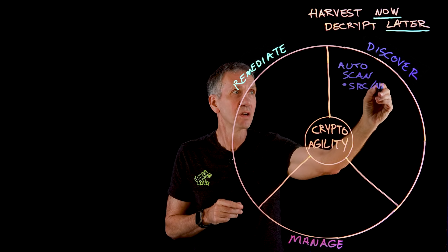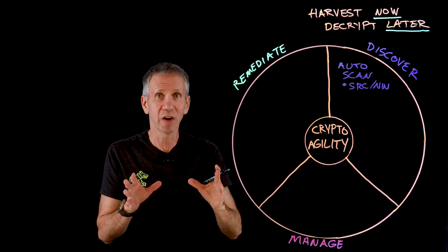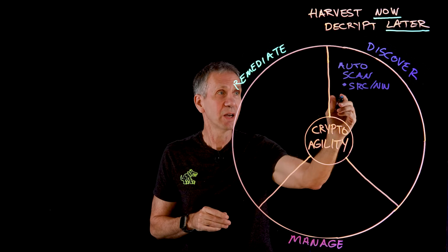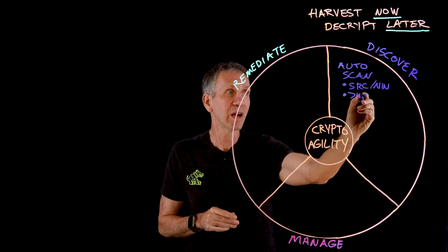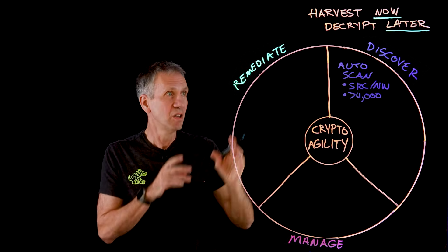it looks across the network, and it looks for all implementations of cryptography in your environment. There was one major bank that when they did this type of exercise, they found that they had more than 4,000 applications with cryptography built into them. That's a lot.